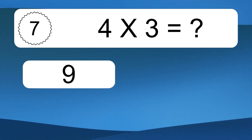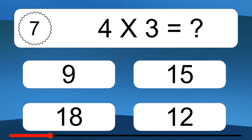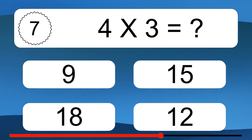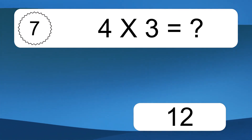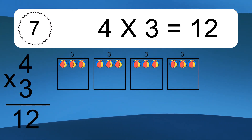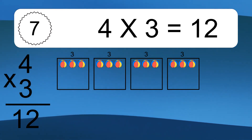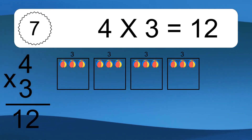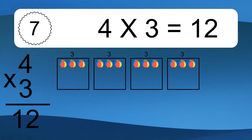Four times three equals what? Four times three equals twelve. We have four boxes, and each box has three colorful balls inside. If you count all the balls in all the boxes together, you will have four times three balls. This equals twelve balls.